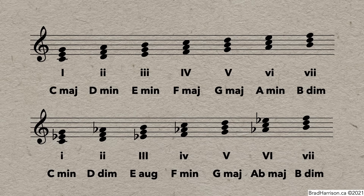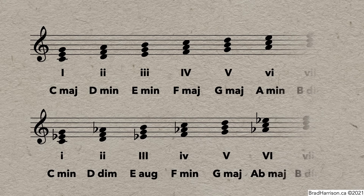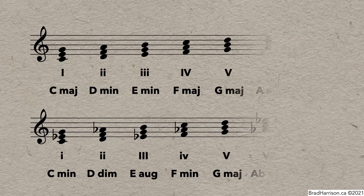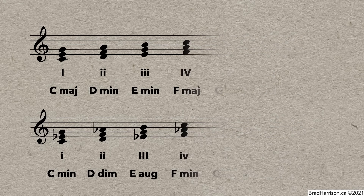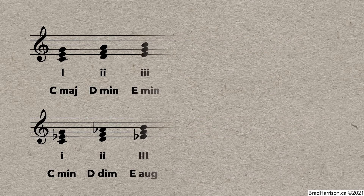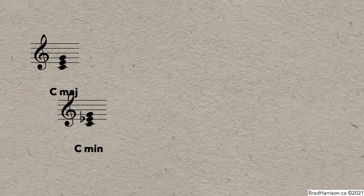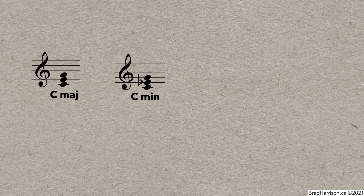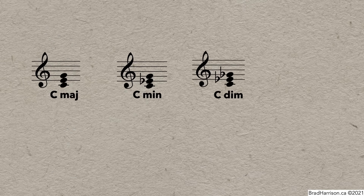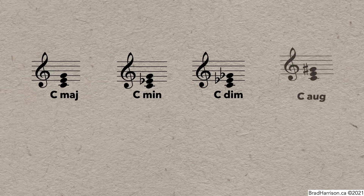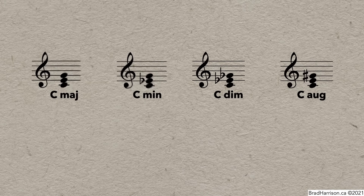Chord quality is determined by the specific intervals between the notes of the triads. To make it a bit easier to see the differences between chord qualities, let's look at four triads that all have the same root. Here's C major, C minor, C diminished, and C augmented.